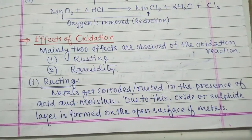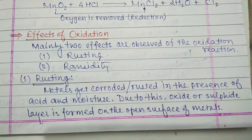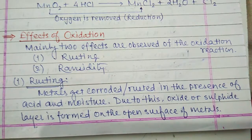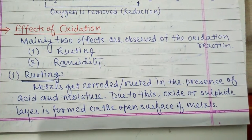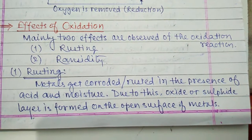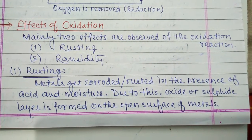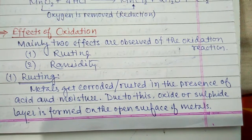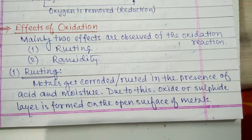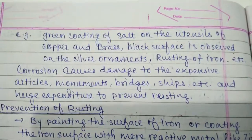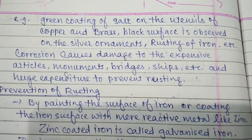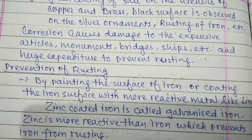These are the effects of oxidation reactions. We experience some effects of oxidation — for example, rusting of iron, the black surface formed on silver metal, and the blue-green layer formed on copper metal and alloys like brass. These are all oxides of the metal. Green patches of salt form on copper and brass utensils, and a black surface is observed on silver ornaments.